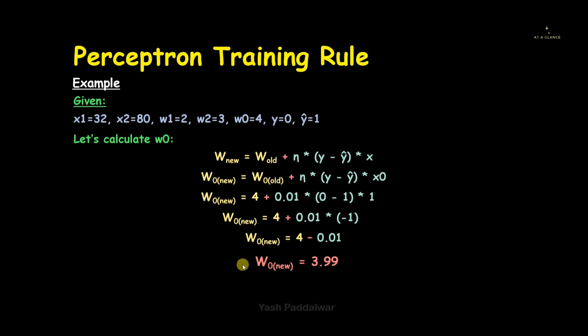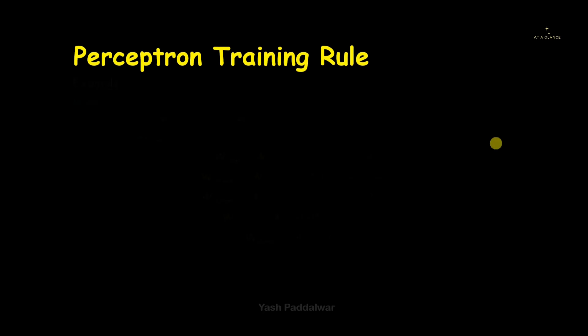The entire process of calculating new weights is now clear. Here we had two input features x1 and x2 plus the bias term, so we calculated three weights. Similarly, if you have n input features you will have to calculate n+1 weights. This was for only one iteration; similarly we have to do it for all data points and repeat this process for a specified number of epochs.